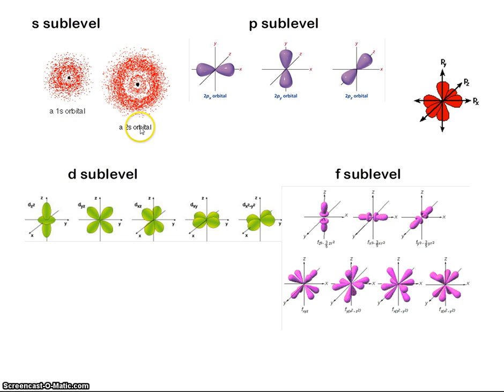We should also point out that these p orbitals exist on top of one another. They're superimposed. So the nucleus would be in the middle, and the three p orbitals would overlap.